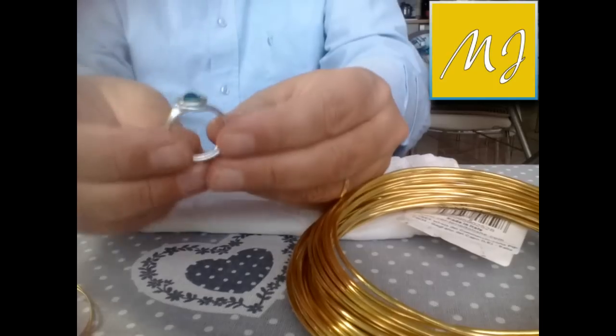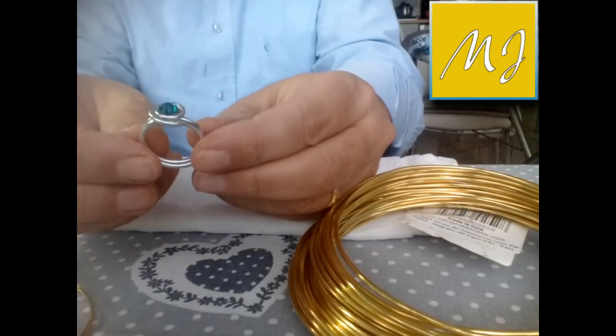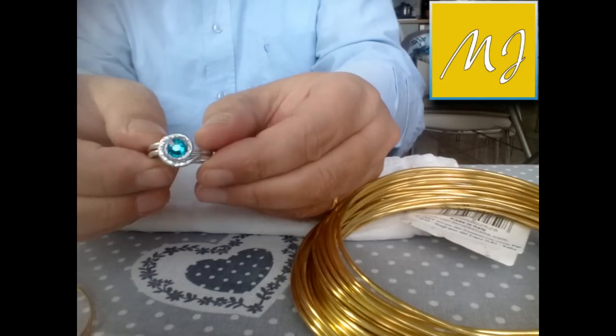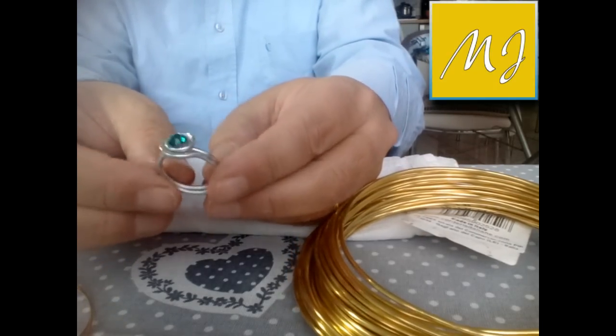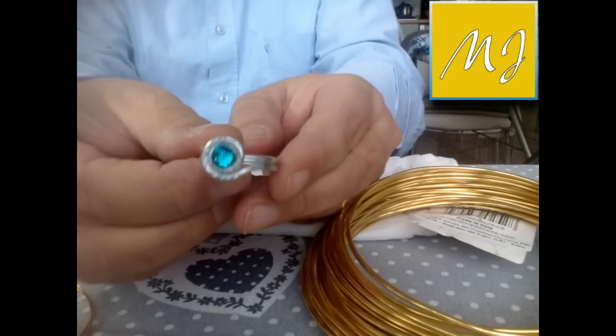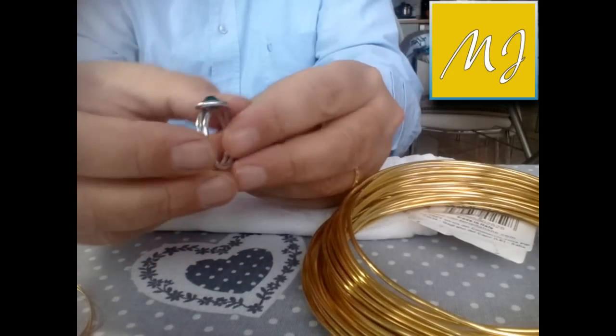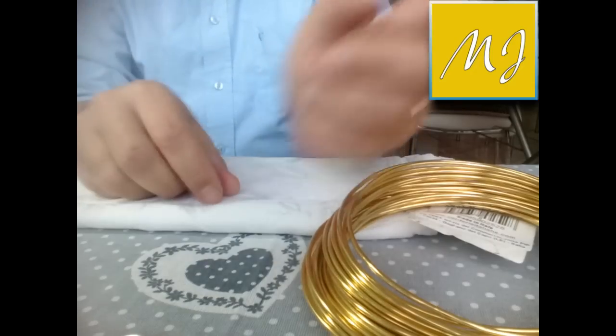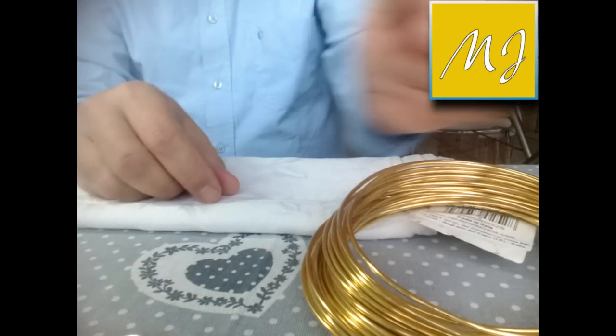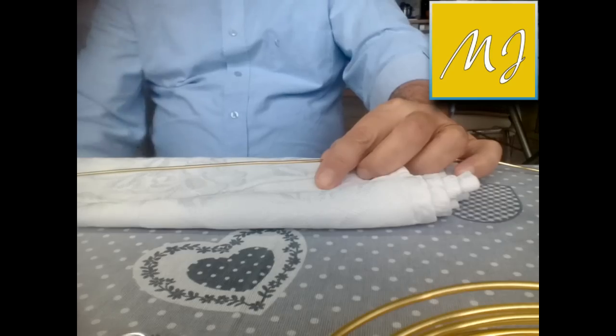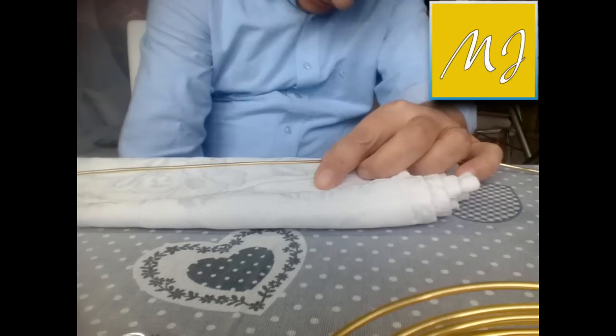Ciao a tutti, voglio mostrarvi come si può costruire un semplice anello a spirale con un filo di alluminio. Vedete qui l'ho fatto in alluminio argento da 2 mm. Oggi faremo la stessa cosa con un filo di alluminio dorato molto bello.